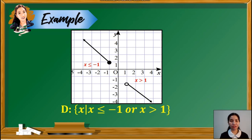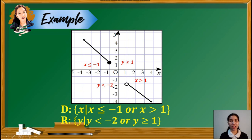As for the range of this graph, we look at the y values of each graph separately from down to up. The first graph has an unshaded point at negative 2 and the graph moves continuously downward, so the values of y are less than negative 2. The other graph starts at point 1, which is included, and moves continuously upward, so the values of y are greater than or equal to 1. Combined, the range is: y is less than negative 2 or y is greater than or equal to 1.